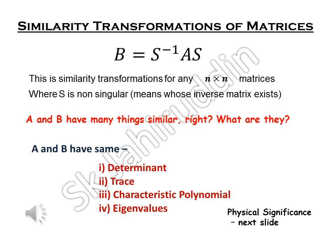So we know that A and B have many things similar. What are they? We know A and B have same determinant, trace, characteristic polynomial and eigenvalues. All these properties you can prove very easily.